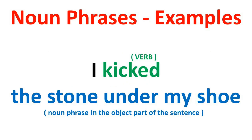Now let's look at one more example. This time the noun phrase in blue is in the object part of the sentence, which comes after the main verb in green. I kicked — there's my verb — the stone under my shoe — there's my noun phrase. It's in the object part of the sentence. It's a noun phrase because it tells you where the stone is, so it's more information about the stone. Good luck.